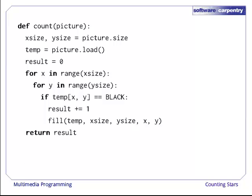Here's our main function. As before, it scans the image top to bottom and left to right using a nested loop. When it finds a black pixel, it increments the count of the number of stars seen, then calls fill to fill in all the pixels connected to that one.